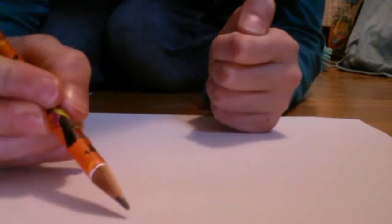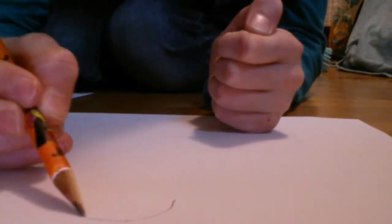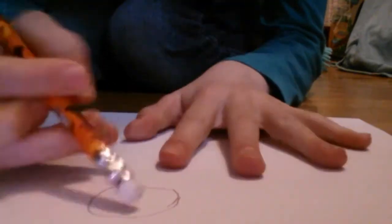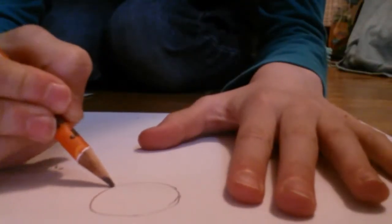We'll start off by drawing the eye. It's just a circle. It does not have to be perfect. Just a basic circle like that.